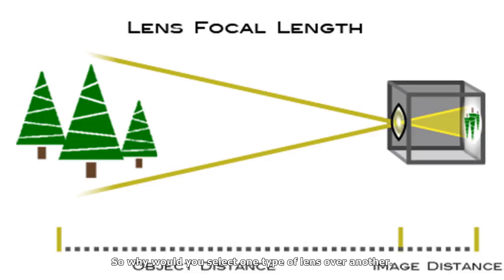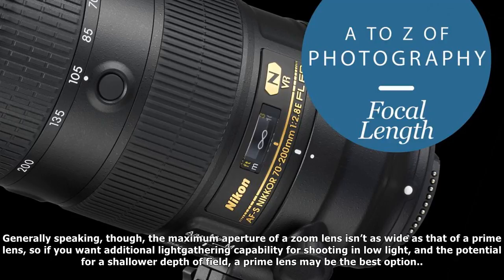Prime vs. zoom: a lens can either have a fixed focal length — prime lenses — or a variable focal length — zoom lenses — with options available in both types covering the full range of focal lengths, from wide angle through standard to telephoto. A zoom lens offers flexibility in that you have a range of focal lengths within a single lens, which is great if space and weight are limited.